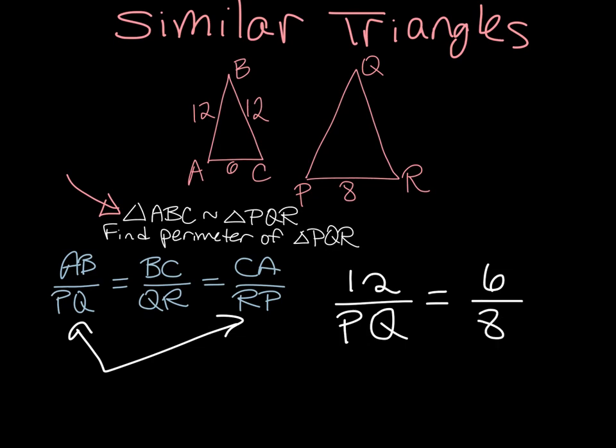In order to solve this proportion, you could go straight to cross multiplying, or to keep the numbers small and make all the calculations easier, I would first reduce this 6 over 8 to 3 over 4.